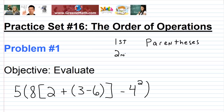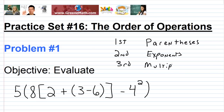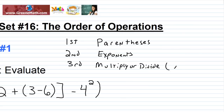The second thing you want to do is work through any exponents you have — apply any exponents you might have. Third, you want to multiply or divide, working from the left of the problem to the right. Multiplication and division have the same priority level; you do them based on which occurs to the left of the other.